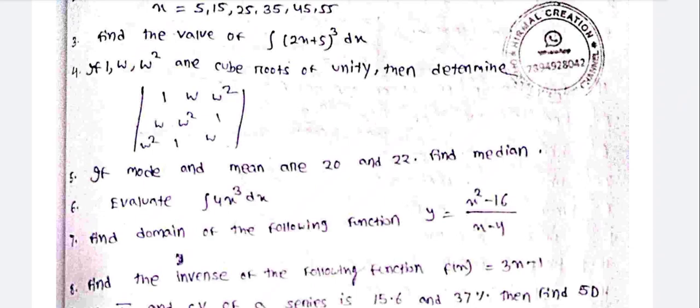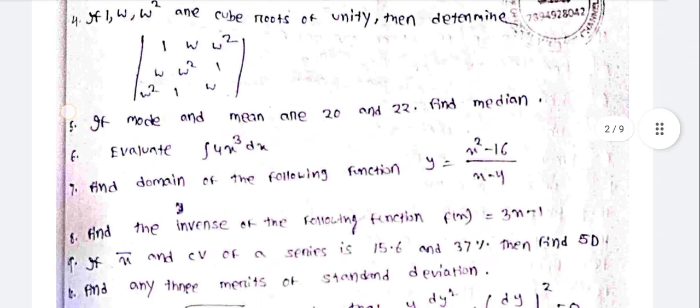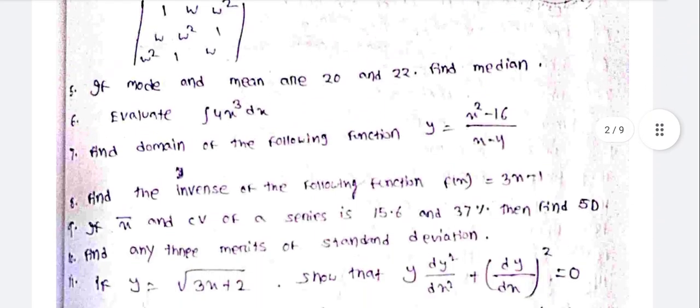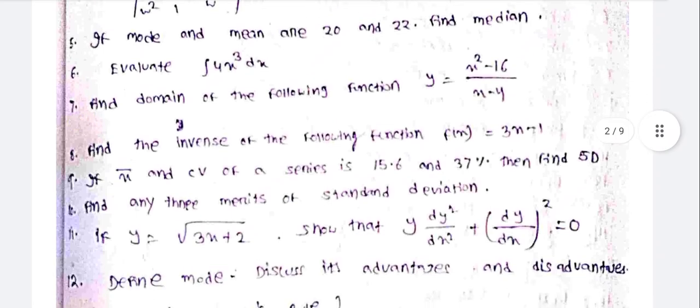If mode and mean are 20 and 22, find the median. Then evaluate the integration of 4x dx.